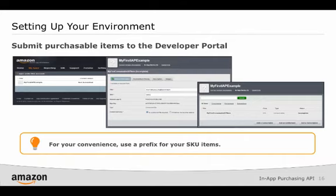Click on Add an Entitlement to enter the relevant IAP item information. The title is what will be displayed to the customer for purchase. A SKU or Stock Keeping Unit is a unique identifier for each distinct purchasable item, unique to your developer account. SKUs are case-sensitive strings up to 150 characters long and can contain lower case a through z, upper case A through Z, numerals 0 through 9, underscores, periods, and dashes. Purchasable items and SKUs have a one-to-one mapping, and the SKU is what your app will pass to the In-App Purchase API. For your convenience, your SKUs should use a prefix, for example, com.mydomain.myapp.item1.